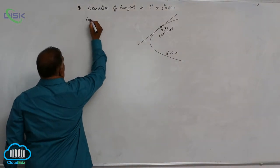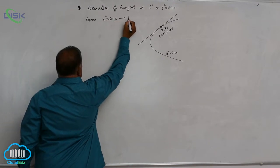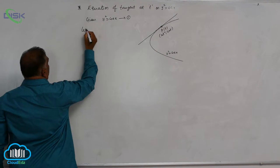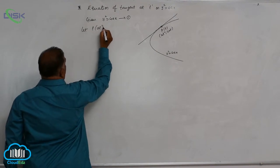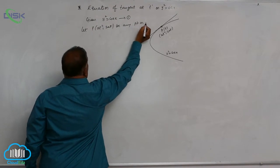Given parabola is y square equal to 4ax, call it equation 1. Let P, at square comma 2at be any point on 1.